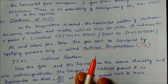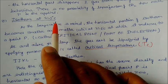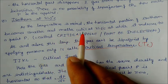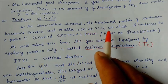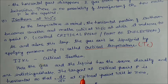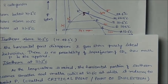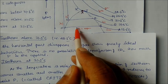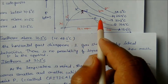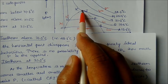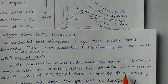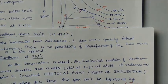Now, for the isotherm at 31.1°C: as temperature is raised, the horizontal portion of the isotherms becomes smaller and smaller until at 31.1°C it reduces to a single point P, called the critical point or point of inflection. This is the critical point visible in the diagram as a very small point on the curve.